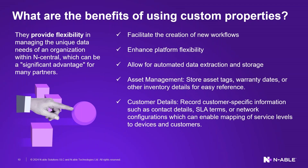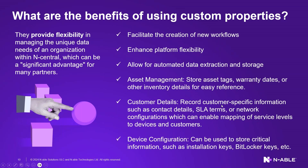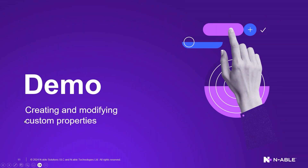Custom properties support customer details — recording customer-specific information such as contact details, SLA terms, your program offering level, and network configurations, which can then be mapped to service levels for customers and their devices. Device configuration information such as site tokens, installation keys, and BitLocker keys can all be stored in N-central so you can access them at your fingertips or use them within automation.